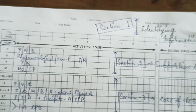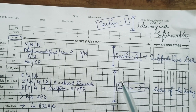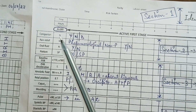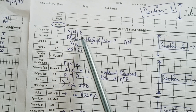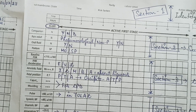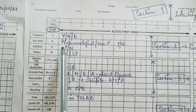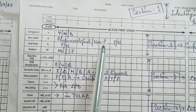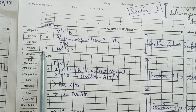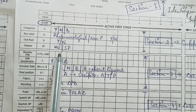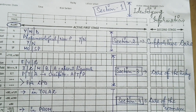Section 2 consists of supportive care. It includes companionship — whether a companion is allowed with the patient — plotted as yes, no, or companionship denied. Birth companion is mandatory nowadays in labour rooms. Second is pain relief — whether any pharmacological or non-pharmacological pain relief is given, yes or no. Oral fluids — yes or no — and the posture of the patient, whether she is mobile or in the supine position.